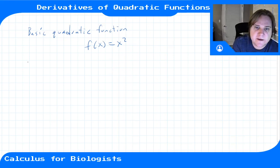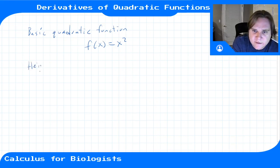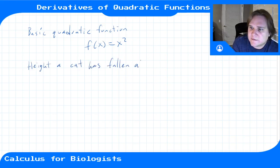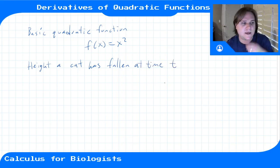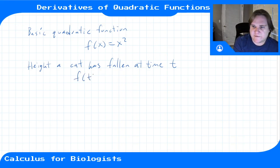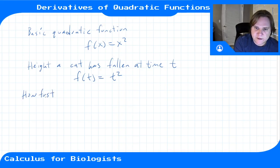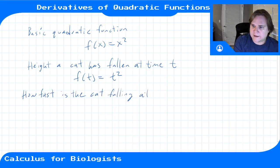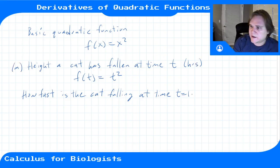So if we want to compute... let's say this corresponds to the height a cat has fallen at time t. Let's say this is given by f(t) = t². How fast is the cat falling at time t = 1? Let's say time is in hours and height in meters. How fast is it falling at that time?